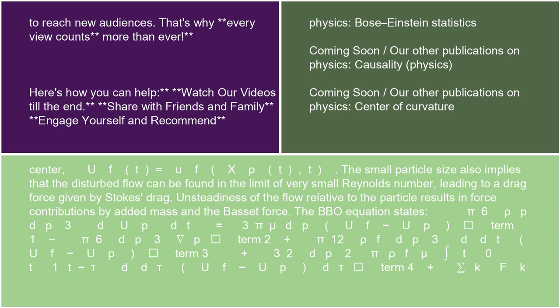The BBO equation states: (π/6)ρp dp³ dup/dt = 3πμdp(uf - up) [Term 1] - (π/6)dp³∇p [Term 2] + (π/12)ρf dp³ (d/dt)(uf - up) [Term 3] + (3/2)dp²√(πρfμ) ∫₀ᵗ [1/√(t-τ)] (d/dτ)(uf - up) dτ [Term 4] + Σk fk [Term 5].